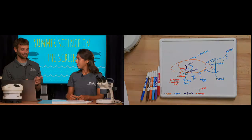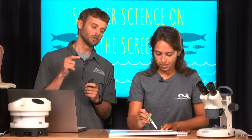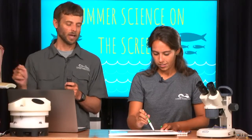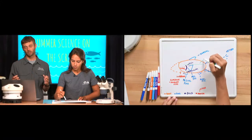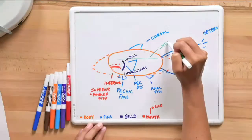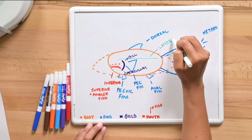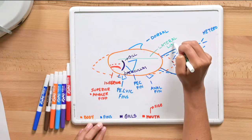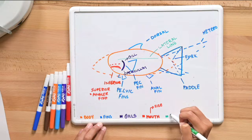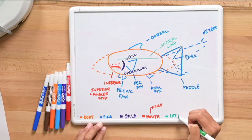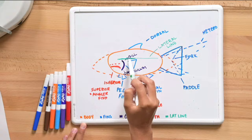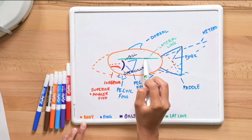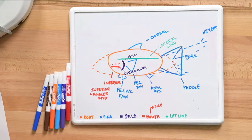The lateral line is a line of gel-filled sacks that run along the side of the fish, giving the fish the ability to feel vibrations in the water. If you've ever stuck your hand in a fish tank and the fish got away even though it couldn't see you, that's why. They can feel the vibration even if they can't see you. That's also how fish know where other fish are in relation to them — in a school, all those fish can feel each other through vibrations created in the water using the lateral line.